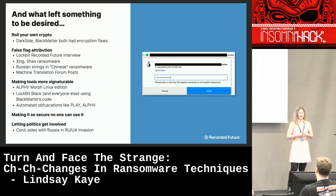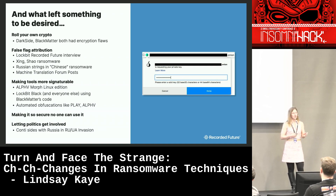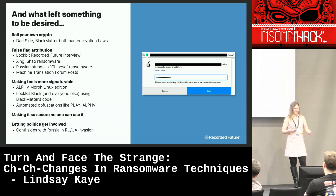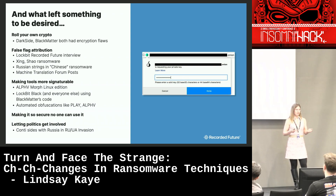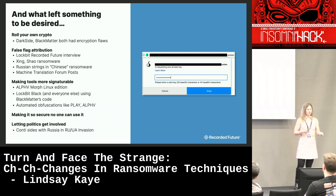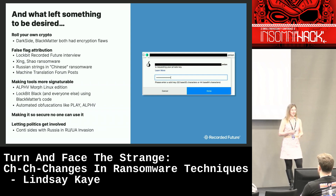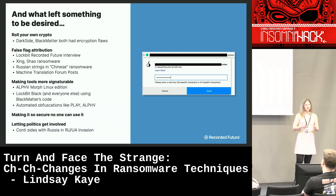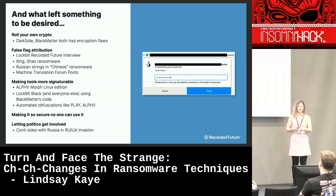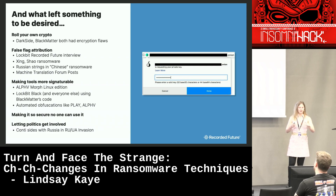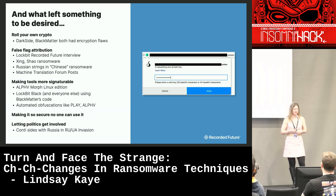We've seen several actors in the past year or so try to do false flag attribution. A couple of groups include Lockbit, Zing, and Xiao Ransomware. Sometimes threat actors try to make their malware harder to reverse engineer but, as an artifact, make it more detectable. I'll talk about the Alpha Morph Linux variant, Lockbit Black, and others using leaked BlackMatter code, plus the use of automated obfuscation like Play and Alpha did. Additionally, making your tool so secure that nobody can use it is also not great for business — the affiliate panel required a Tor private key, which is significantly more challenging to implement.